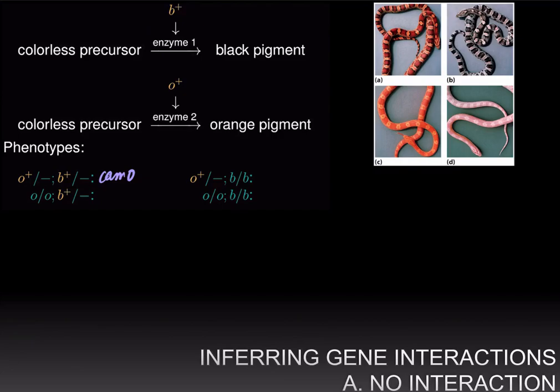If you have the dominant allele of the O gene but you are homozygous for the mutant allele of the B gene, you will have enzyme 2 and will make orange pigment, but you will not have enzyme 1 since you don't have any B+ alleles. Therefore, you won't make black pigment, and your phenotype is going to be orange.